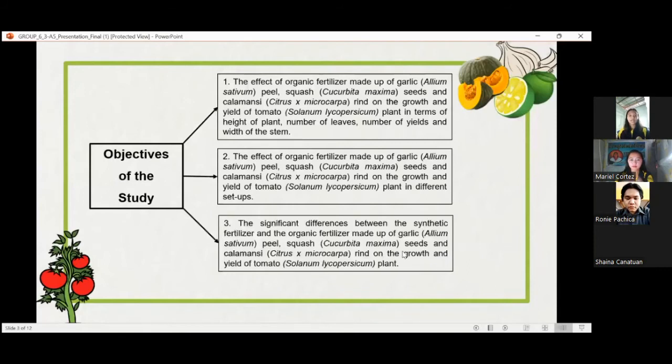Last one, the significant differences between the synthetic fertilizer and the organic fertilizer made up of garlic Allium Sativum peel, squash Cucurbita Maxima seeds, and calamansi Citrus X Microcarpa rind on the growth and yield of tomato Solanum Lycopersicum plant.